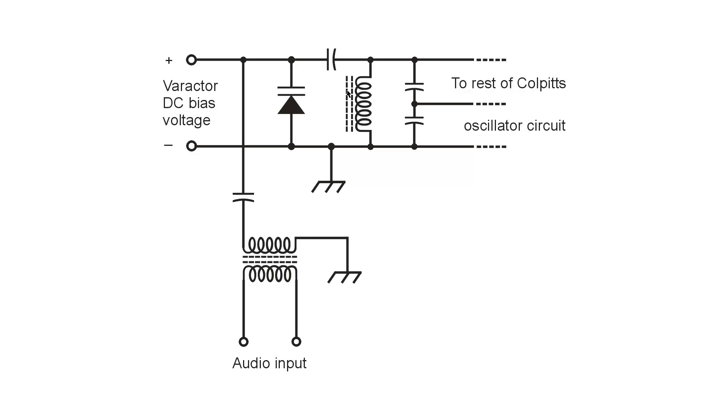Basically what this circuit does is modulate the frequency or alter the frequency of a Colpitts oscillator circuit. You can recognize that by the tap in the capacitor. The rest of the Colpitts oscillator circuit, you've already seen a circuit like that in this particular book and in all editions of Teach Yourself Electricity and Electronics.